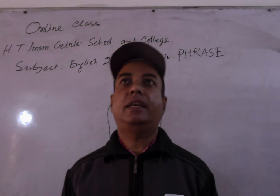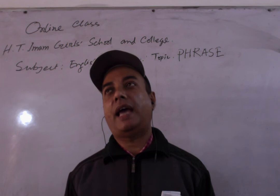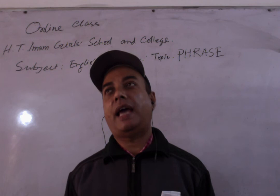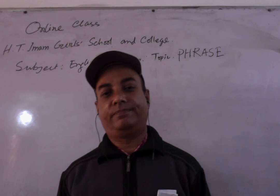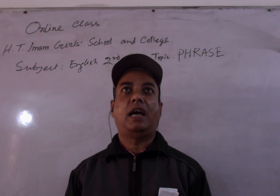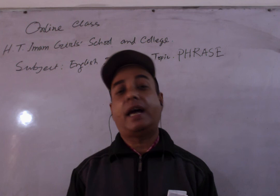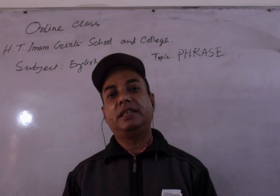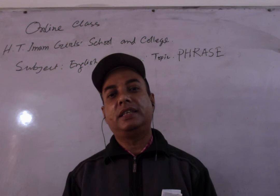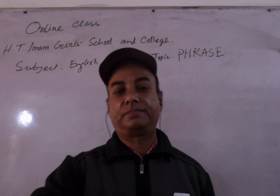There is another phrase: participle phrase. The structure of this phrase requires adding '-ing' at the end of a verb. A participle phrase is used as an adjective. For example, 'Don't get into a running bus.' Here, we add '-ing' at the end of 'run,' and the word 'running' is used as an adjective — it modifies the word 'bus.' So 'running bus' is a participle phrase.